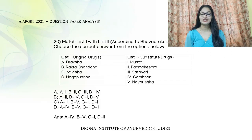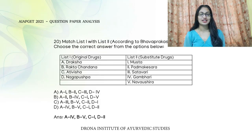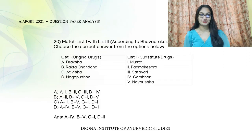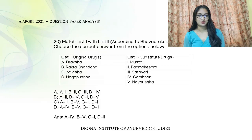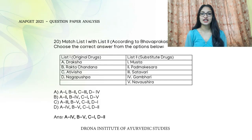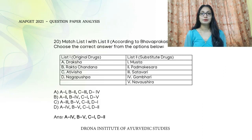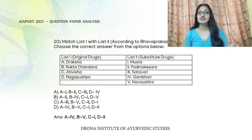The next match the following question lists original drugs and their substitutes according to Bhava Prakasha. For Draksha, Gambari is the substitute. For Rakta Chandana, Nava Ushira is the substitute. For Ativisha, Musta is the substitute. For Nagapushpa, Padmakeshara is the substitute. Shatavari is the substitute for Medha and Mahamedha.